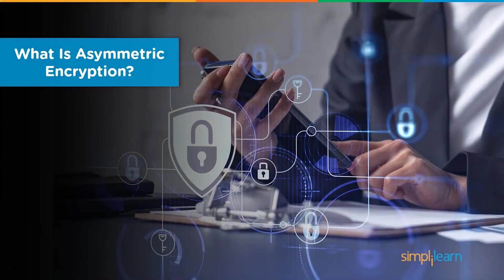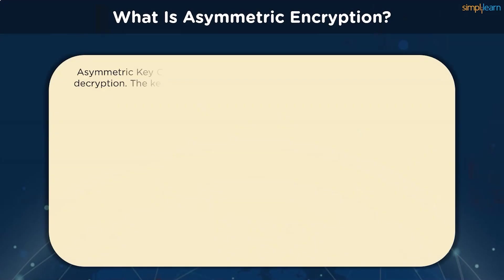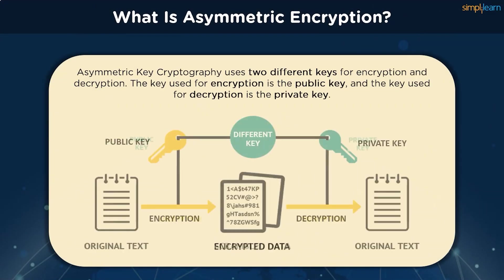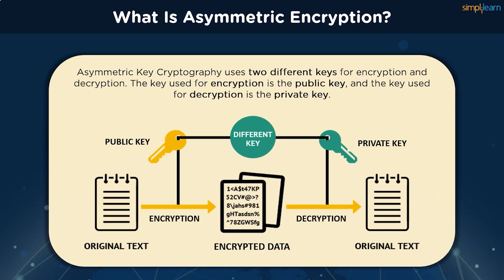Let's take a look at asymmetric encryption. Asymmetric encryption uses a double layer of protection. There are two different keys at play here: a private key and a public key. The public key is used to encrypt the information pre-transit and the private key is used to decrypt the data post-transit. This pair of keys must belong to the receiver of the message. The public keys can be shared via messaging, blog posts, or key servers since there are no restrictions.